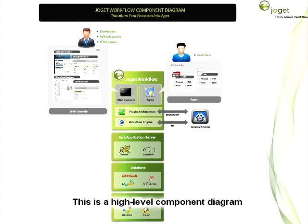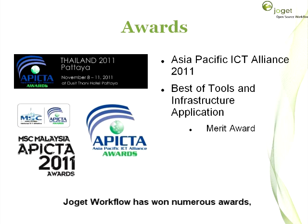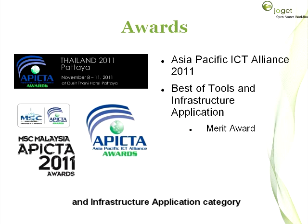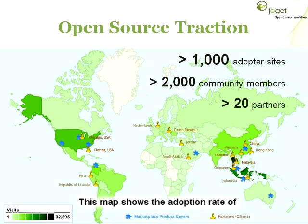This is a high-level component diagram for Joget Workflow. Since its initial release in 2009, Joget Workflow has won numerous awards. The most recent of which are the best of tools and infrastructure application category at the MSC Malaysia APICTA 2011 awards, and subsequently the merit award in the same category at the Asia-Pacific level APICTA 2011 awards. This map shows the adoption rate of Joget Workflow throughout the world.